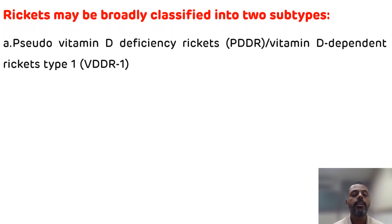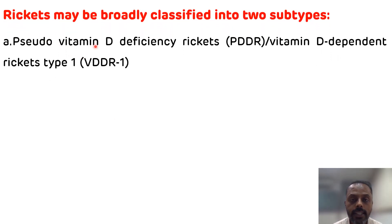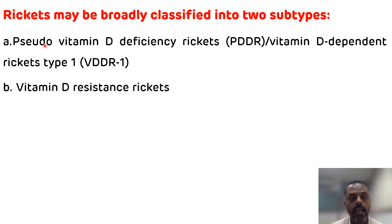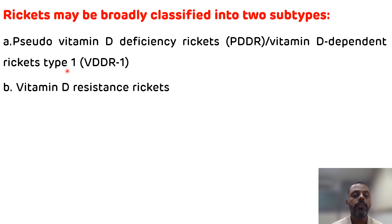These rickets are of two types. The first is pseudo-vitamin D deficiency rickets, also known as vitamin D dependent rickets type 1. The second is vitamin D resistant rickets, which occurs due to mutation in the vitamin D receptors itself. Let's see the details of these two types of rickets.